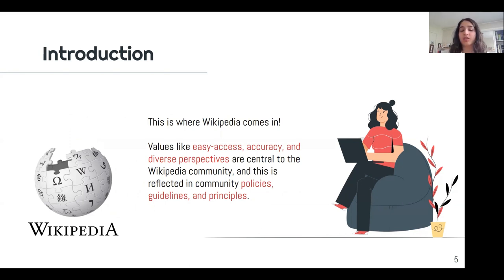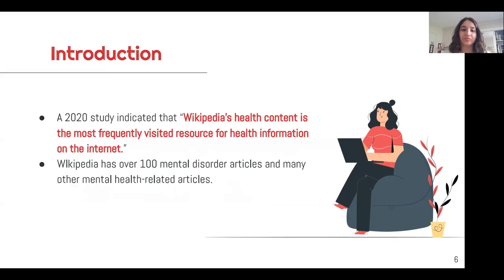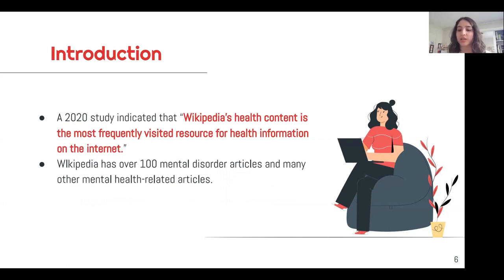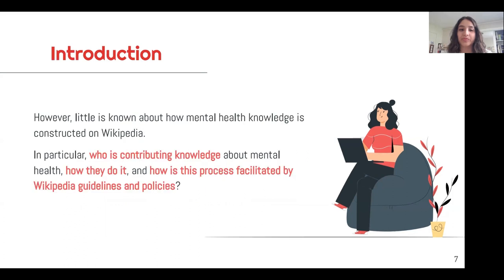This is reflected in the Wikipedia community guidelines, policies, and principles. A 2020 study also indicated that Wikipedia's health content is the most frequently visited resource for health information online. Wikipedia has over 100 mental disorder articles and many more that are mental health related. All this being said, little is known about how mental health knowledge is constructed on Wikipedia.